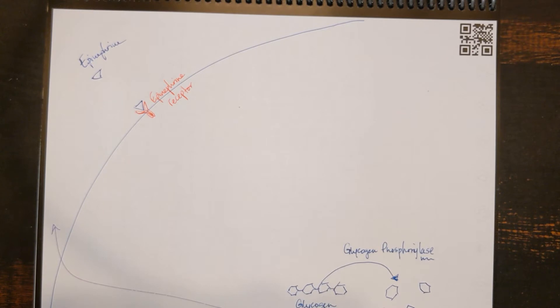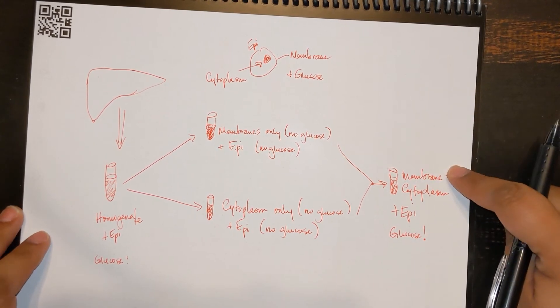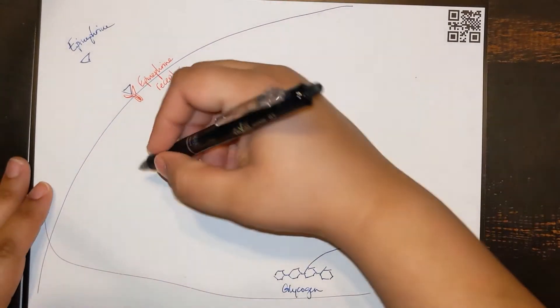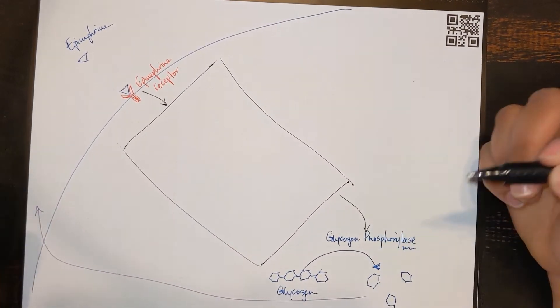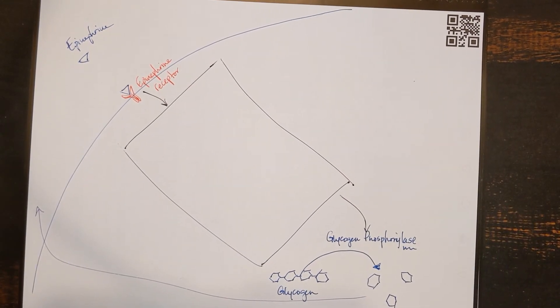The next step was, something has to happen in the cytoplasm for glycogen phosphorylase to be activated. Because if you remember, in our previous sets of experiments, we needed both membrane and cytoplasm to have glycogen phosphorylase be activated. So the next question was, what happens here? Because he knew something had to happen from the epinephrine receptor, and the ultimate result was to activate glycogen phosphorylase. But what cellular response was in place? His first step was, let's try and figure out what type of molecule it is.